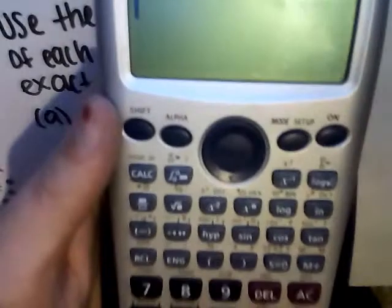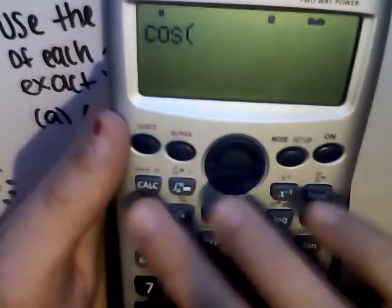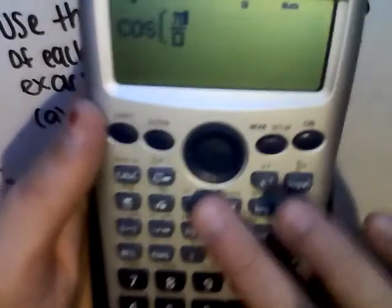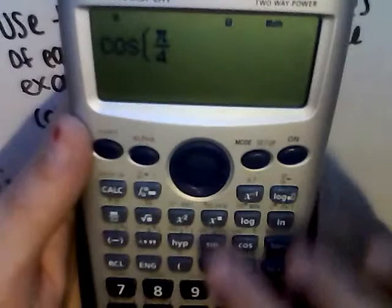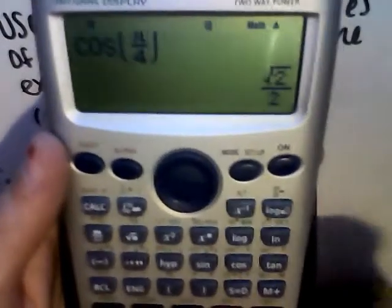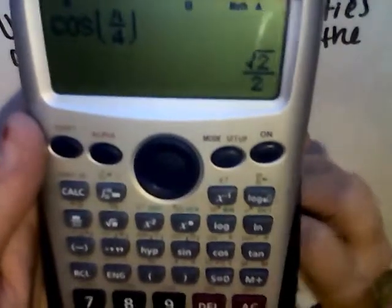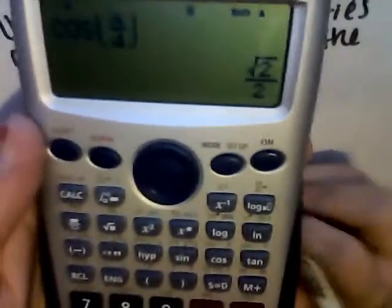Now we're going to click cosine and then put pi over 4. And that's our exact value.